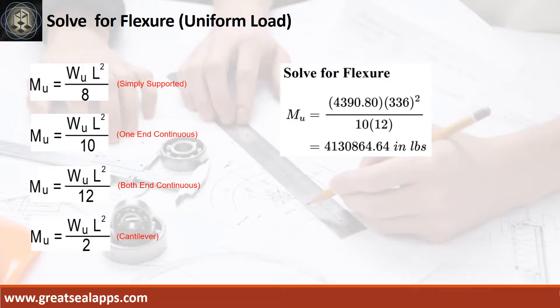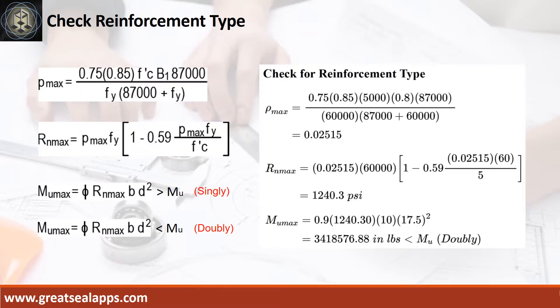Given factored load equals 4,390.8 pounds per foot, L equals 28 feet. The maximum moment is 4,130,864.64 inch pounds. The rho max from the given design criteria is 0.02515. Then the maximum comfort beam design ratio, Rn max equals 1,240.3 PSI.